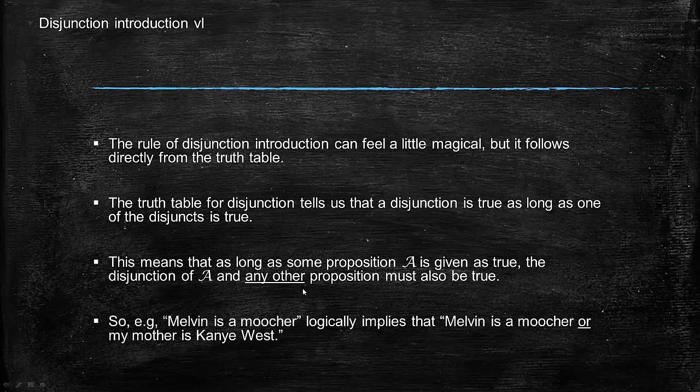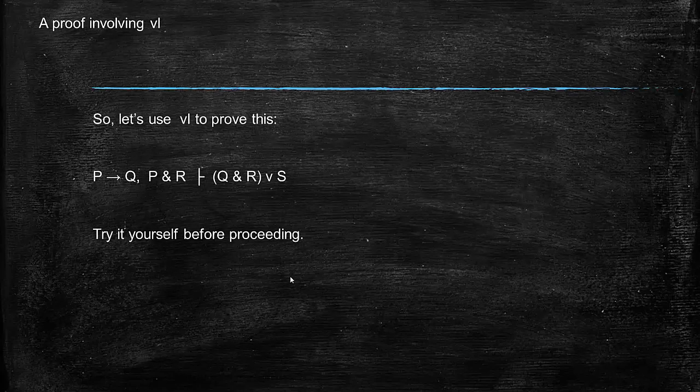So, 'Melvin is a moocher' — if that's given, it logically implies that 'Melvin is a moocher or my mom is Kanye West.' So we could do a little proof with OR introduction. Go ahead and pause the video and see if you can do this on your own: if P then Q, P and R, entails Q and R or S.